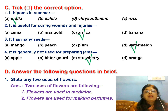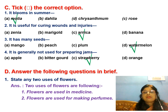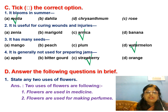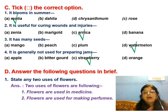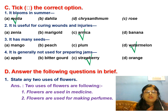The next question is: answer the following questions in brief. Two uses of flowers — all of you know the uses of flowers. Flowers are used in medicine, and flowers are used for making perfumes. Some other uses of flowers are also there and you can write those as well.